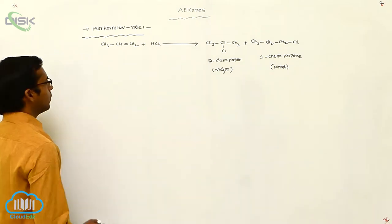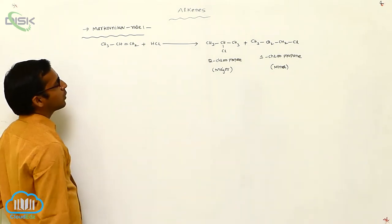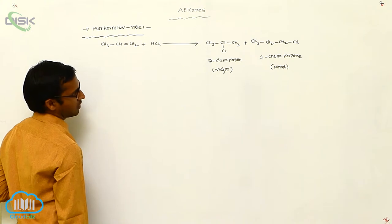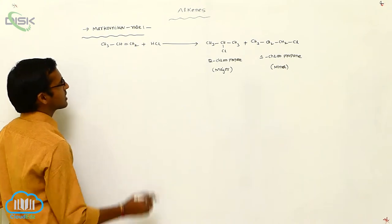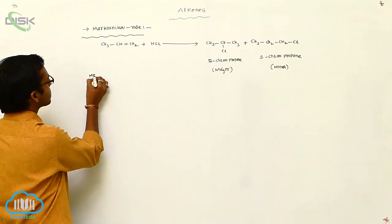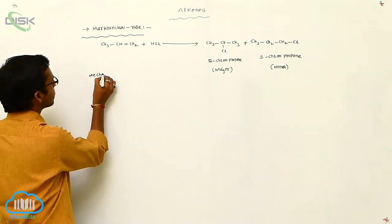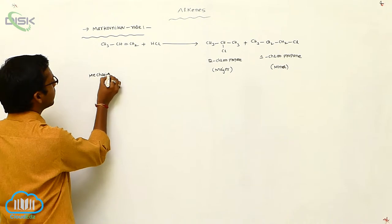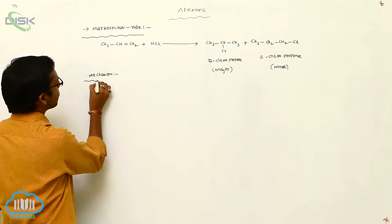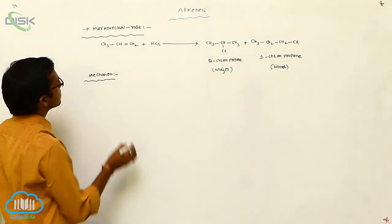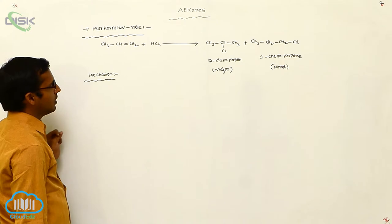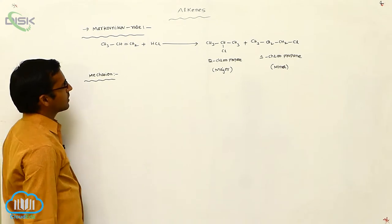Now, why is 2-chloropropane the major product? That is explained based on the mechanism. After that we will discuss the definition — what is the definition of Markovnikov rule.